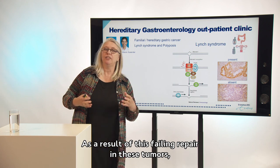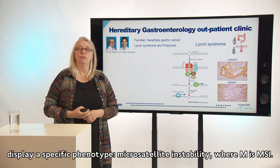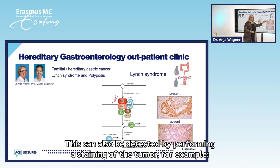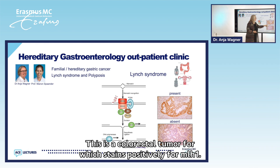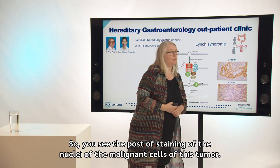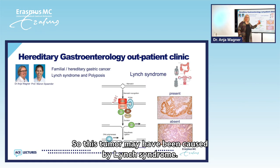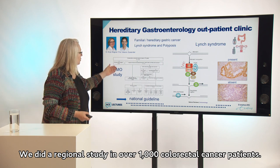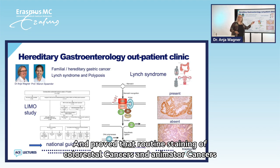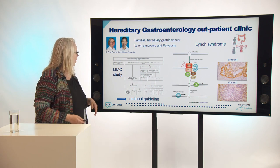As a result of this failing repair, tumors of Lynch syndrome patients display a specific phenotype: microsatellite instability, or MSI. This can be detected by performing a staining of the tumor. For example, this colorectal tumor stains positively for MLH1 — you see the positive staining of the nuclei of the malignant cells — while in this tumor the nuclei do not stain, suggesting it may have been caused by Lynch syndrome. We did an original study in over 1,000 colorectal cancer patients and proved that routine staining of colorectal cancers and endometrial cancers under the age of 70 years is feasible and cost-effective to detect Lynch syndrome. This was implemented in the national guideline.